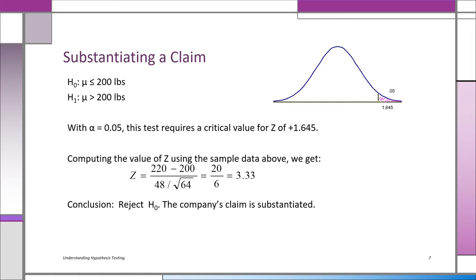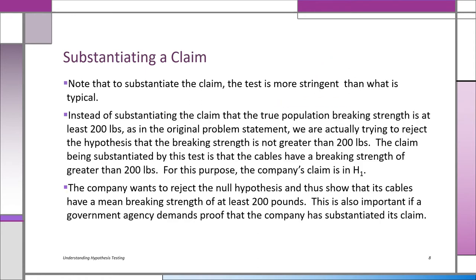That means H0 is that mu is less than 200 pounds. We use alpha of 0.05, look at the sample evidence, and get a Z of 3.33. We reject H0. Rejecting H0 here is good, because we reject the H0 that breaking strength is less than 200 pounds. We set it up this way purposely — we want to reject H0 and be left with H1, which is our claim. When you're substantiating a claim, H1 becomes the claim.